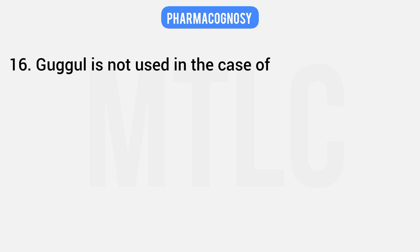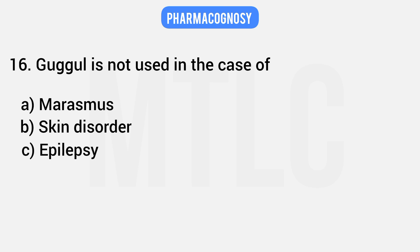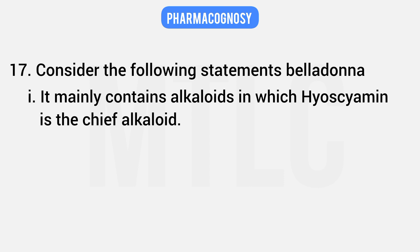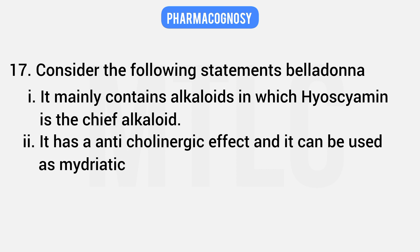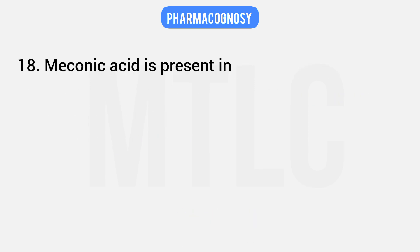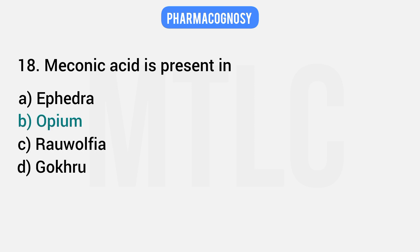Guggul is NOT used in the case of epilepsy. It is used for marasmus, skin disorders, and tuberculosis. Regarding Belladonna: it mainly contains alkaloids, with hyoscyamine as the chief alkaloid; it has anticholinergic effects and can be used as a mydriatic — both statements are correct. Meconic acid is present in opium — that is the correct answer among ephedra, opium, Rauwolfia, and Gokru.